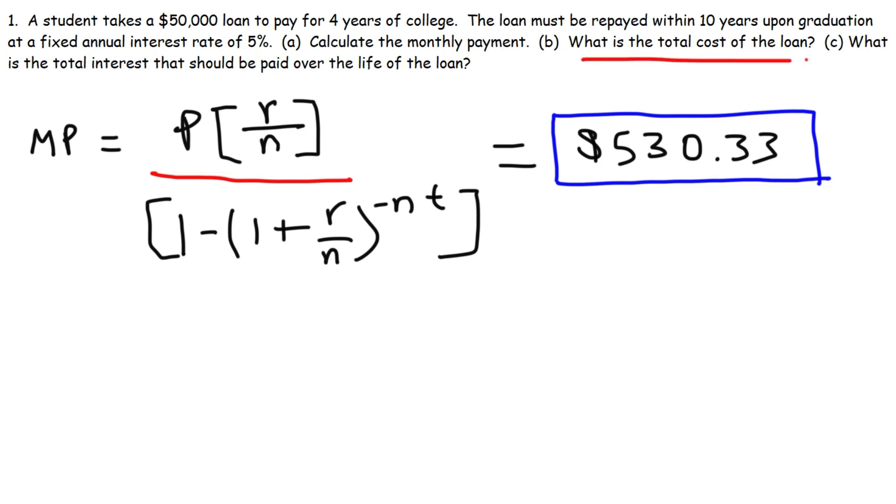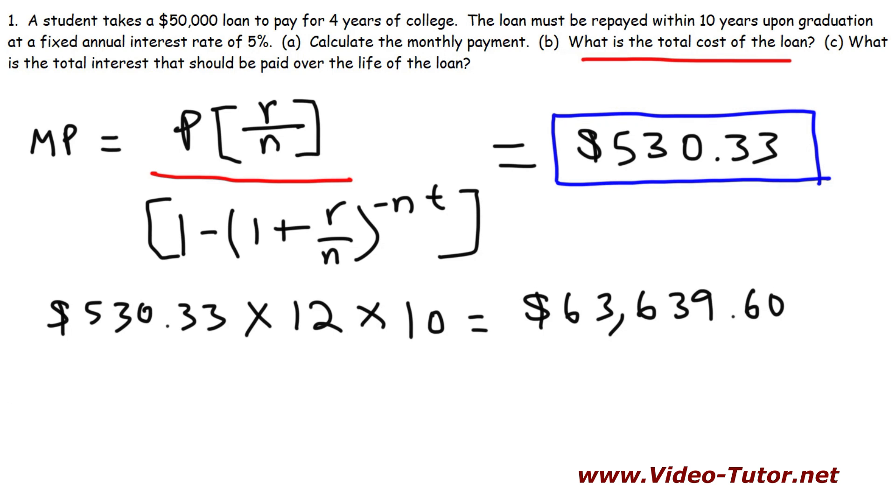What is the total cost of the loan? So what is the total price that the student will have to pay over the course of 10 years? To get that answer, we need to take the monthly payment of $530.33, multiply it by 12 months in a year, and then multiply that by 10 years. That's the term of the loan. So it's $530.33 times 12 times 10. And that's going to be $63,639.60. So that is the total cost of the loan. That's the answer for part B.